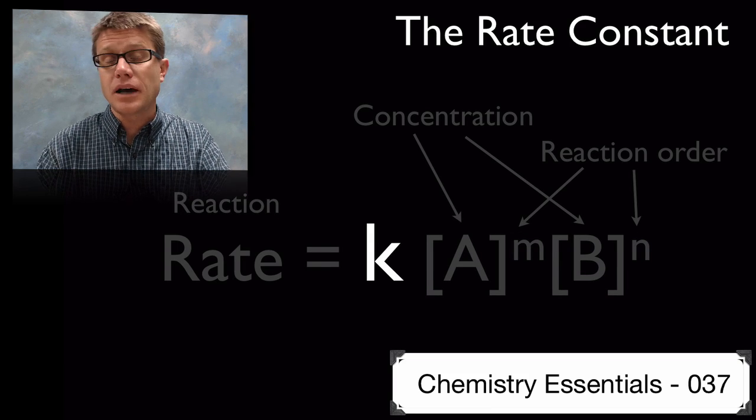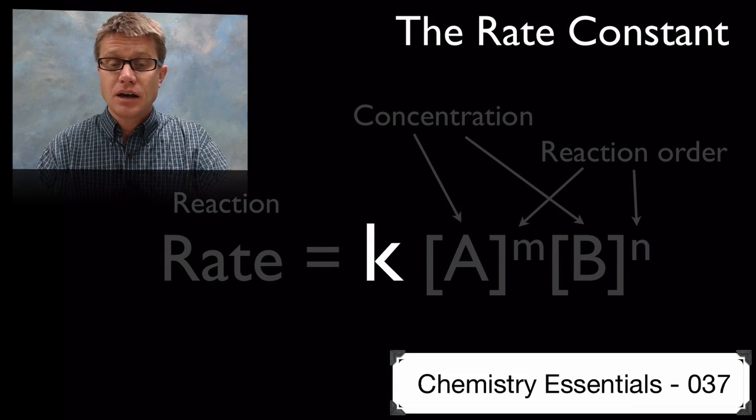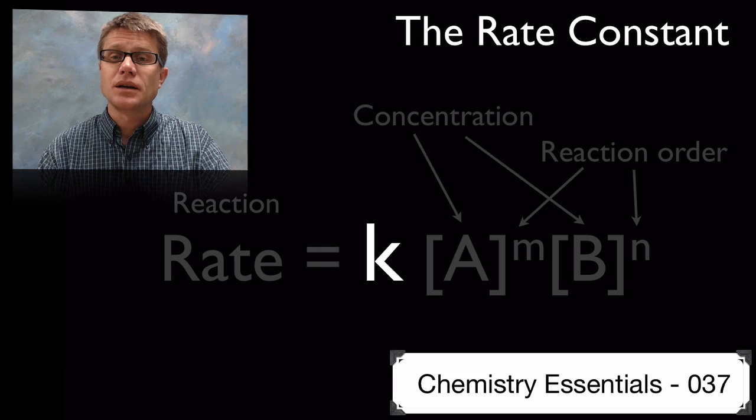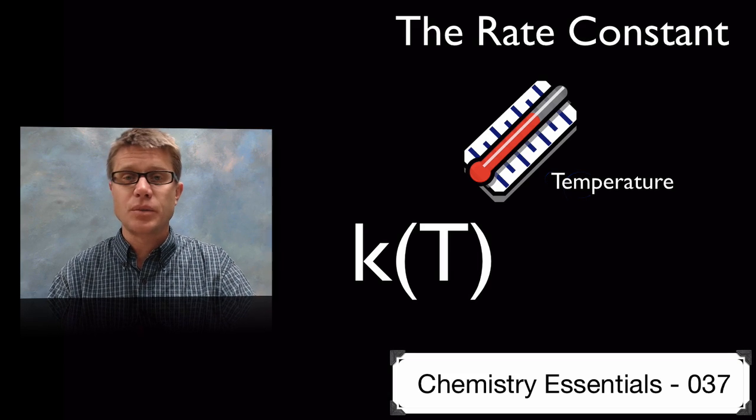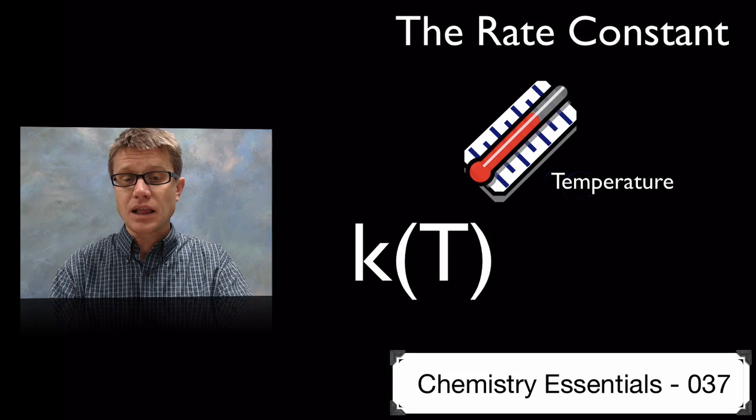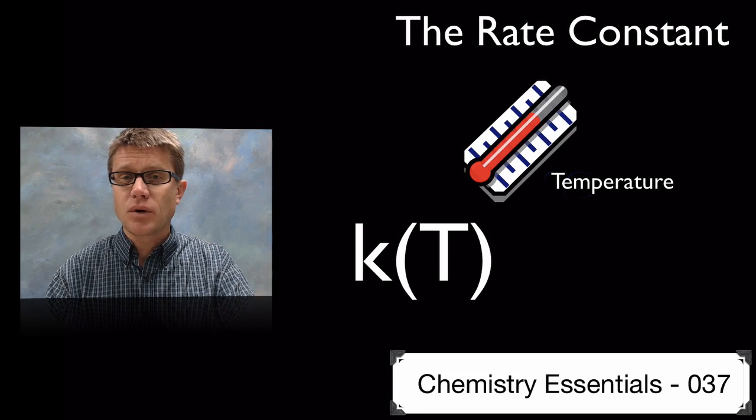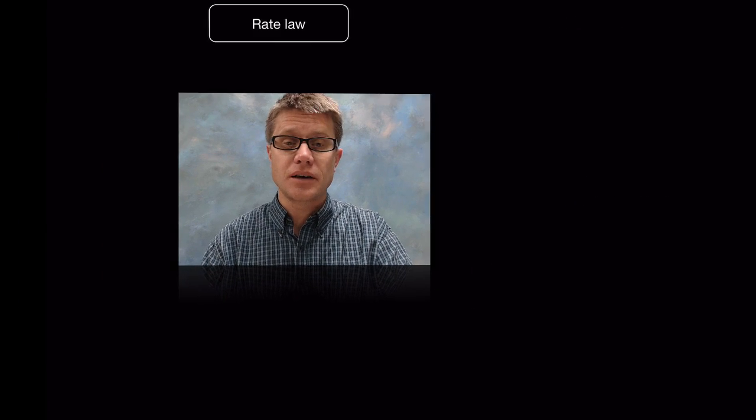So if we get rid of all those things what we're left with is K. And so what is K? It's going to be this rate constant. And so the first thing you should understand about that rate constant is that it's not constant. It's dependent upon things like temperature and the presence of a catalyst. But really you want to understand what rate constant is and how it can be calculated.